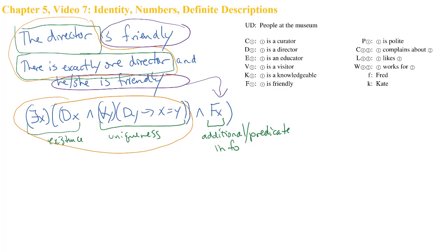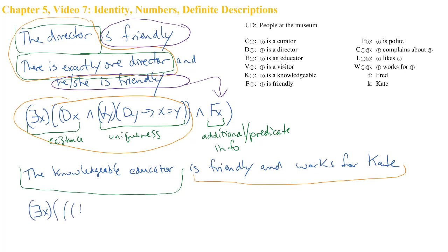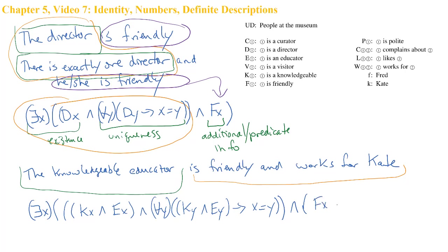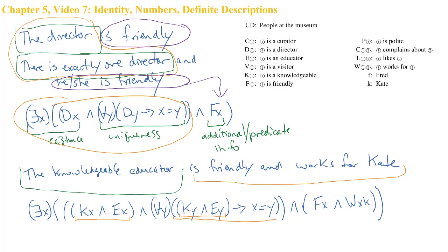One last fairly straightforward example: 'The knowledgeable educator is friendly and works for Kate.' We can see the definite description portion and the additional information portion. We've got: there's at least one thing that is knowledgeable and an educator, and for anything that is knowledgeable and an educator it's just x again — existence and uniqueness — and now we add x is friendly and x works for Kate. All our parentheses match.